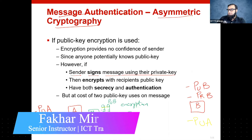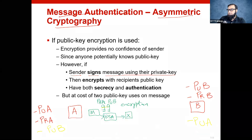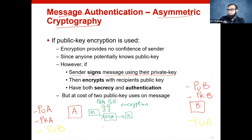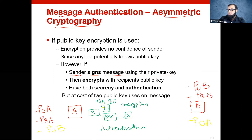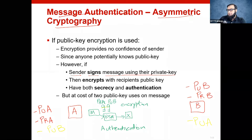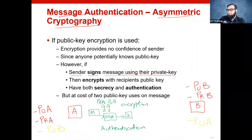Instead of using the public key of B, if I work with the private key of A, then we will say authentication. So if I use my private key over RSA and I get X, then this X can be used for authentication purposes. If I input the public key of somebody and encrypt it, then this data can only be read by the person who has the corresponding private key.